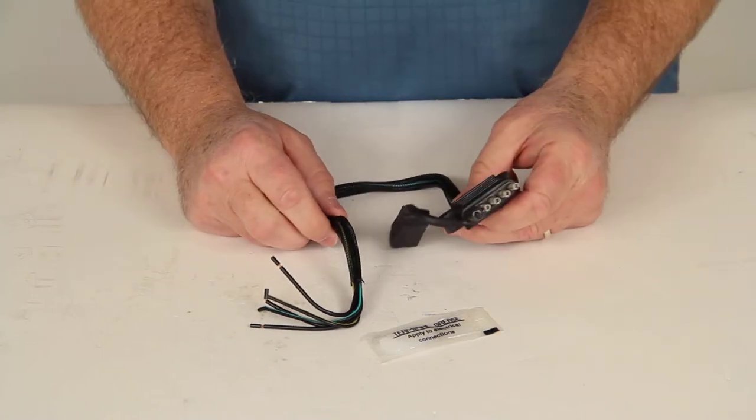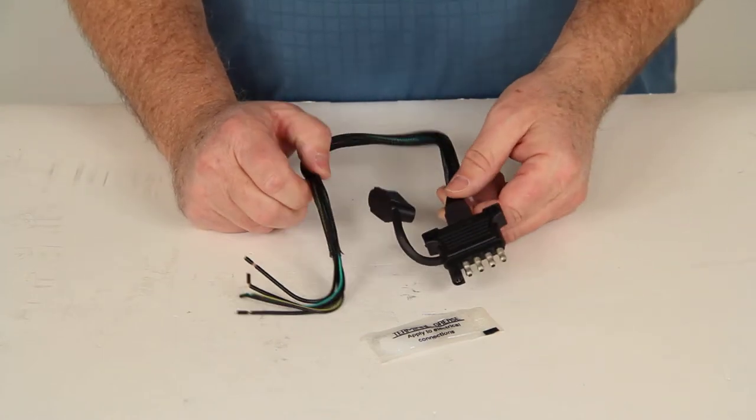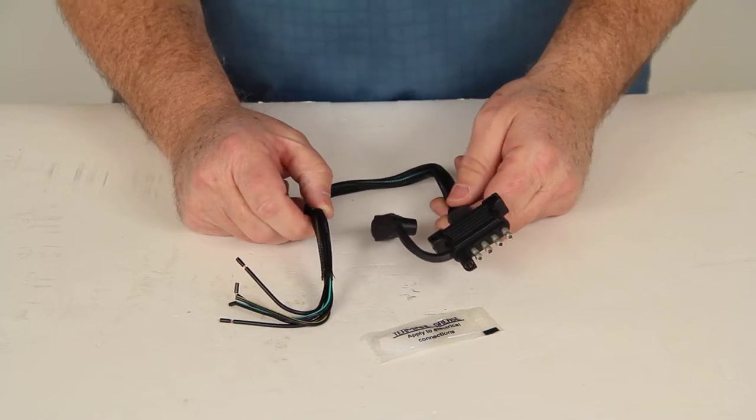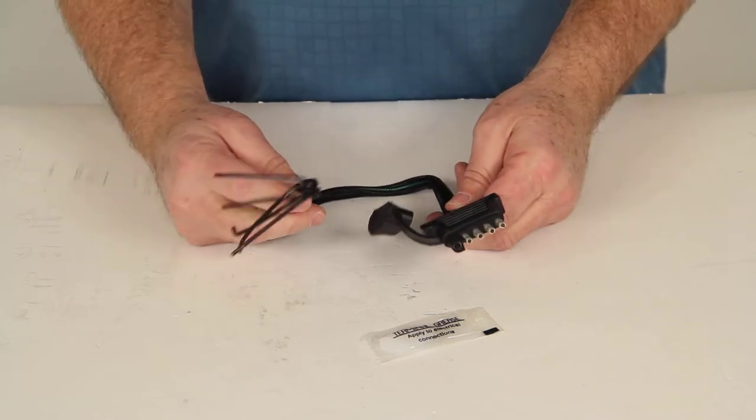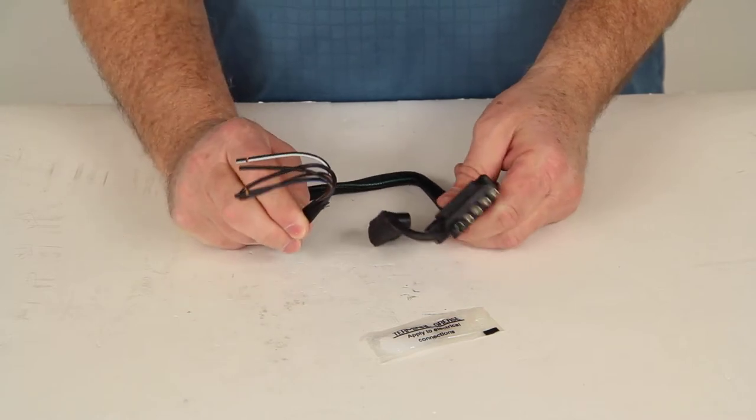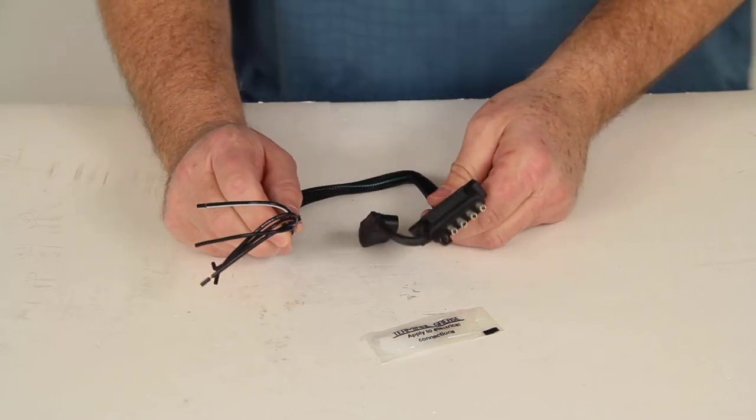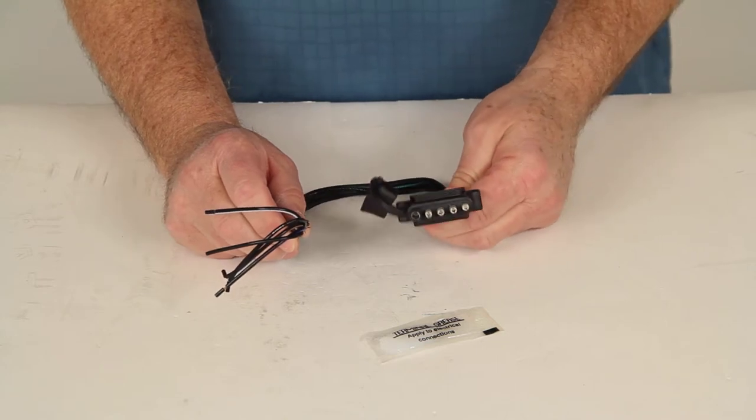Today we're going to review part number HM47910. This is the Hopkins Endurance 5-Way Flat Trailer Connector for the trailer end. This five-wire design is common on boat trailers that use hydraulic brakes. It'll provide the backup function to release the surge brakes to allow you to go in reverse.